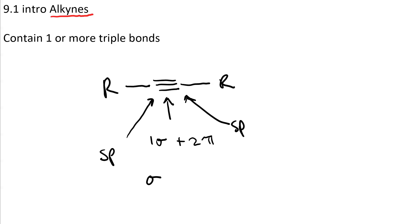This means that the sigma bond is from sp overlap with sp, and the pi bonds, as always, are p overlapping with p.